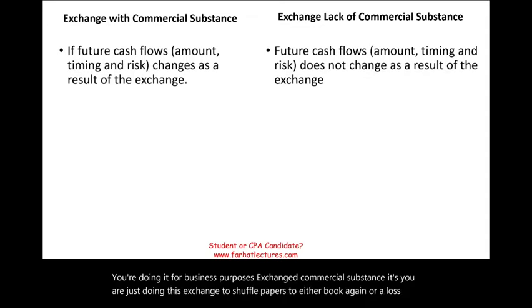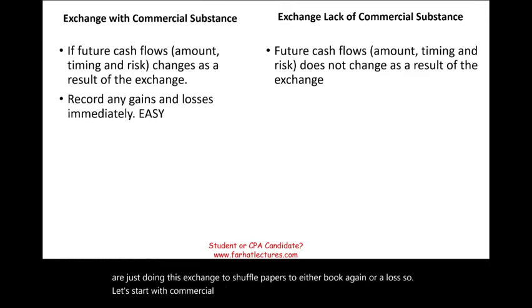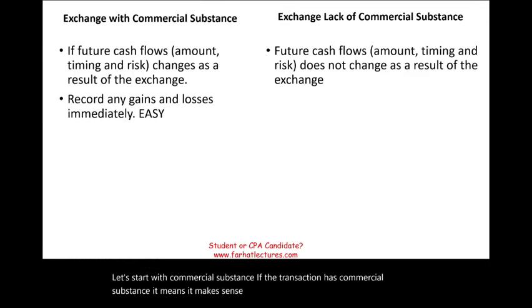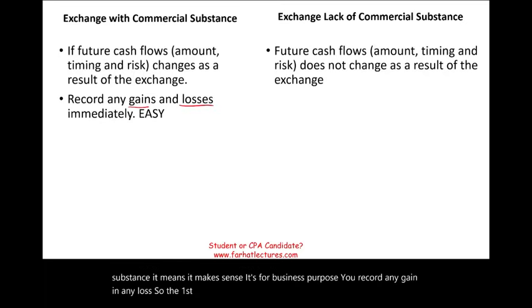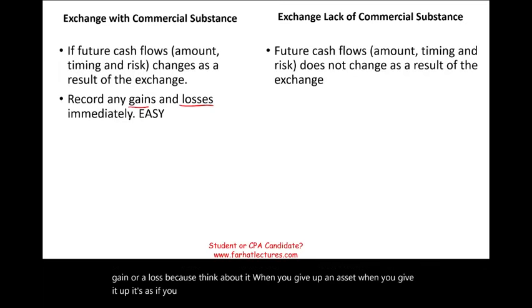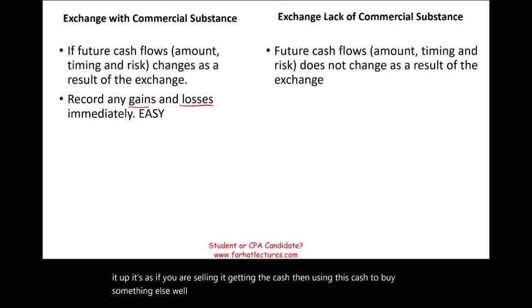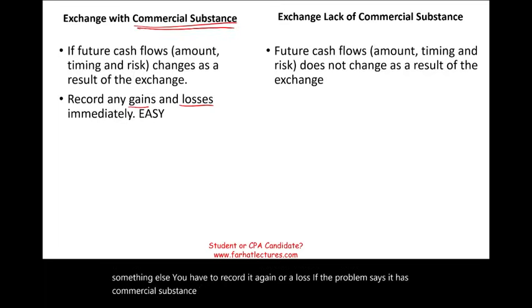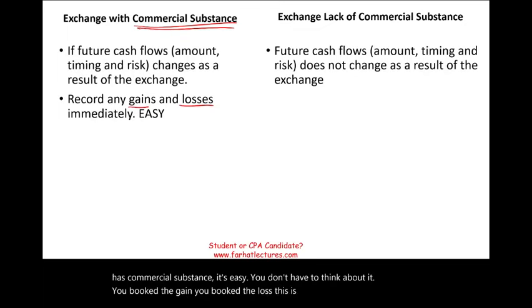If the transaction has commercial substance, it makes business sense, and you record any gain and any loss. The first thing you do in an exchange is determine whether you have a gain or a loss, because when you give up an asset it's as if you are selling it, getting the cash, then using the cash to buy something else. If the problem says it has commercial substance, it's easy — you book the gain, you book the loss.